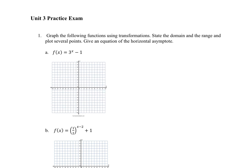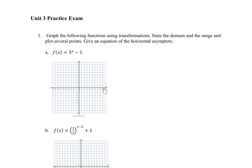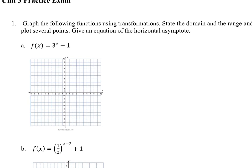In part A, we need to state the domain and range, plot several points, and give the equation of the horizontal asymptote. The horizontal asymptote of an exponential function is typically along the x-axis at y equals 0, unless there's been a vertical shift. In this case, the graph has a vertical shift down one unit, so the horizontal asymptote is at y equals negative 1.